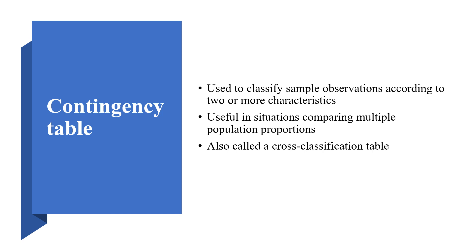A contingency table is used to classify sample observations according to two or more characteristics. It is useful in situations comparing multiple population proportions. It is also called a cross-classification table.